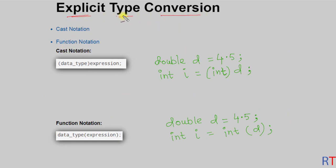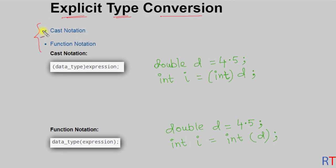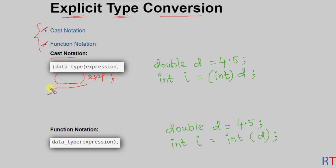Now we're going to talk about explicit type conversion. For explicit type conversion we can either use cast notation or function notation. As per the cast notation, the data type stays inside the parenthesis and the expression goes outside, and this way we can explicitly convert one data type to another.